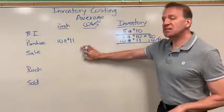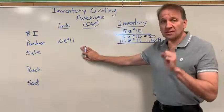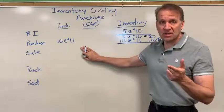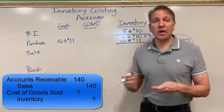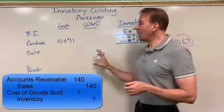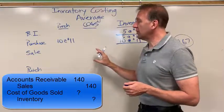Now if you recall, we sell seven. Sales price is twenty dollars, so we'll debit accounts receivable and credit sales for seven times twenty, or one hundred forty dollars. But now what we want to know is what's the cost of goods sold associated with those seven.